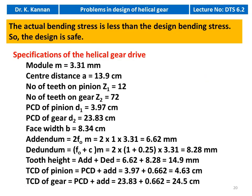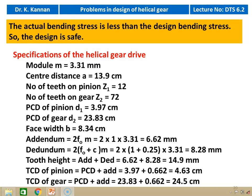Specifications of the helical drive — Example 2: module = 3.31 mm, center distance = 13.9 cm, number of teeth on pinion = 12, number of teeth on gear = 72, diameter of pinion = 3.97 cm, diameter of gear = 23.83 cm, face width = 8.34 cm, addendum = 6.62 mm, dedendum = 2 × 1.25 × 3.31 = 8.28 mm, tooth depth = 14.9 mm, tip circle diameter of pinion = 3.97 + 0.662 = 4.63 cm, tip circle diameter of gear = 23.83 + 0.662 = 24.5 cm.